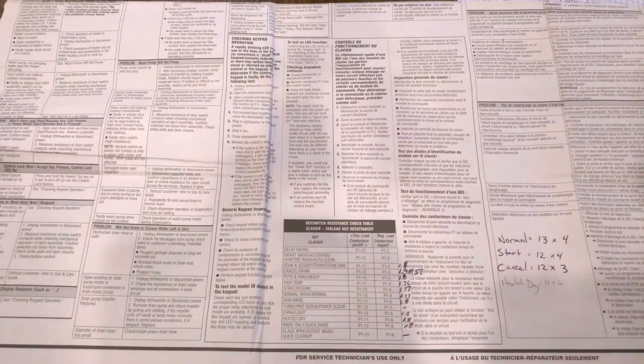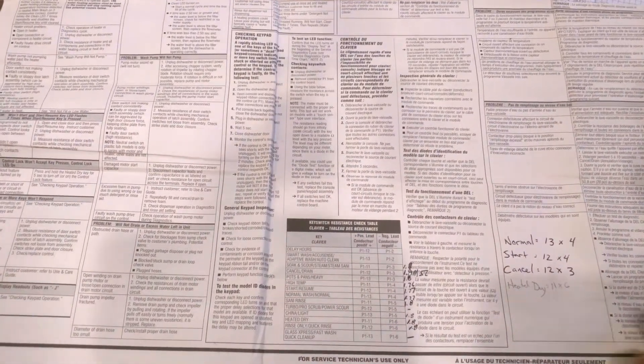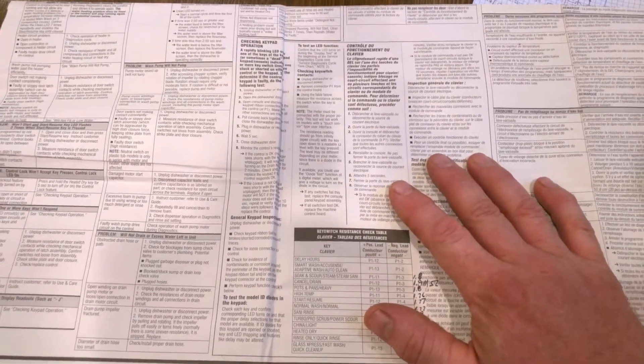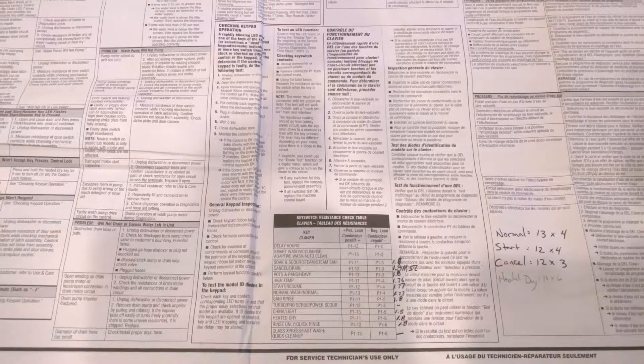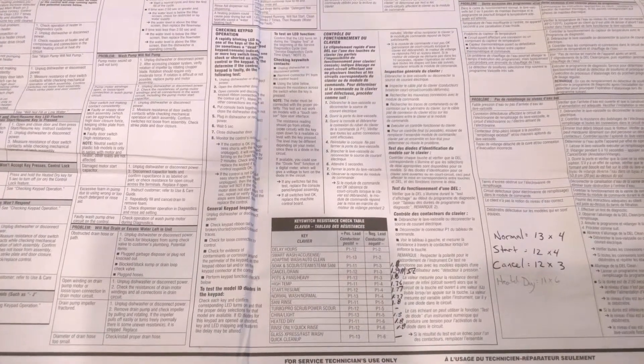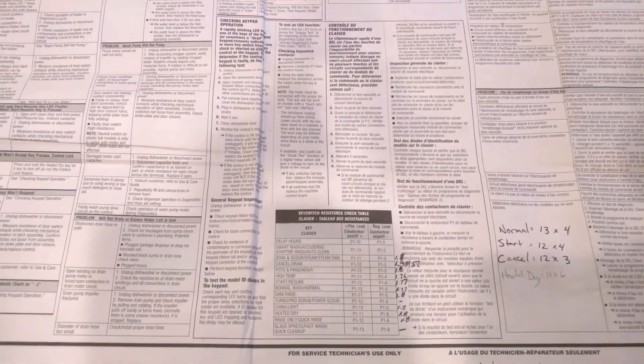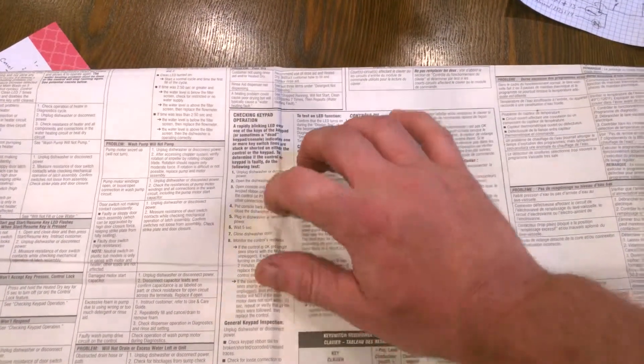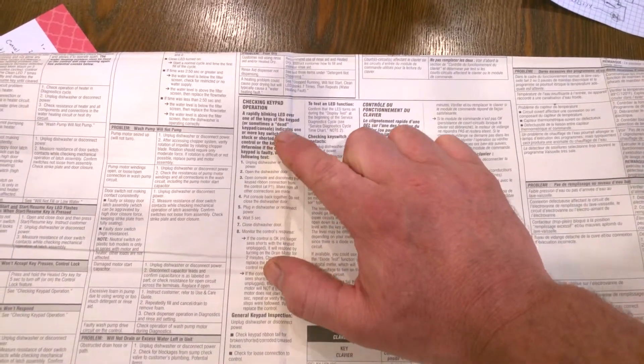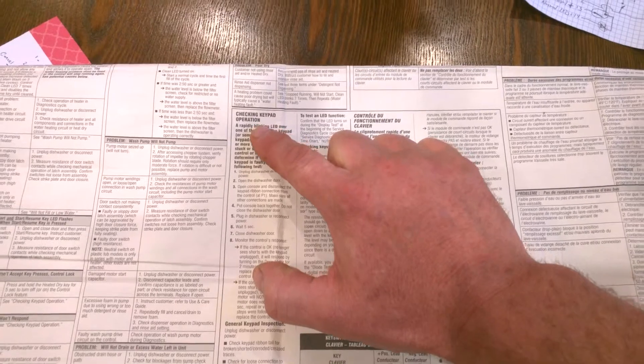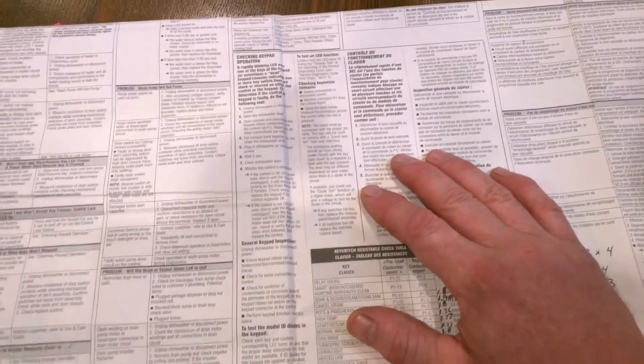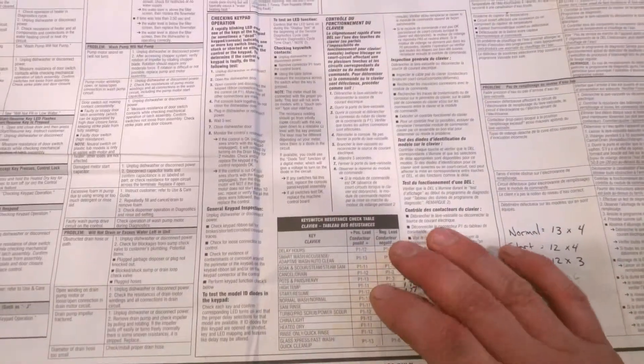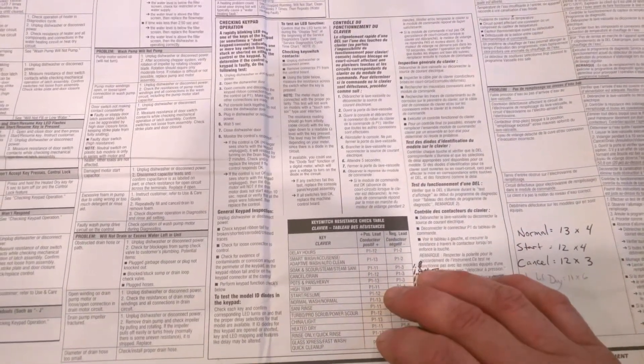A source of information I found during my research was the technician's paper that comes with the appliance. Unfortunately, it was not the first place I looked—of course I went to Google. In the technician's sheet, it tells you how to check the keypad operation and how to determine if it's the keypad or the circuit board.